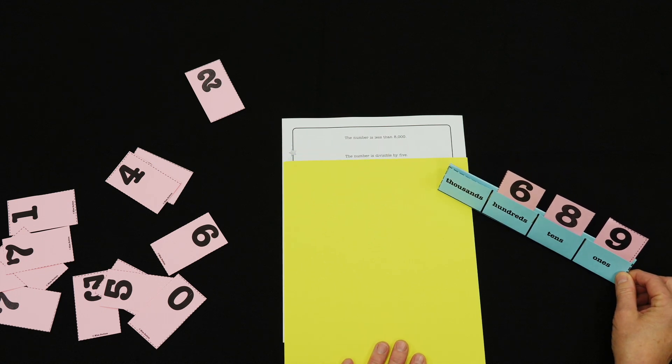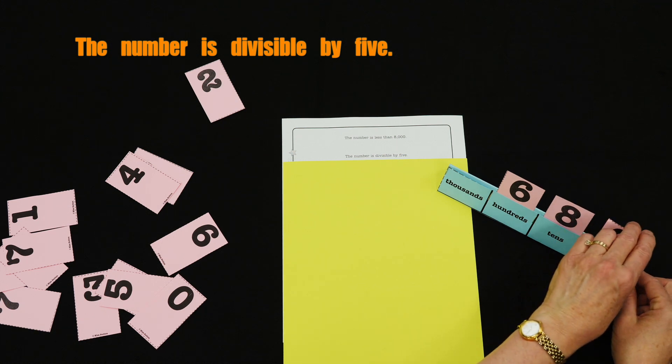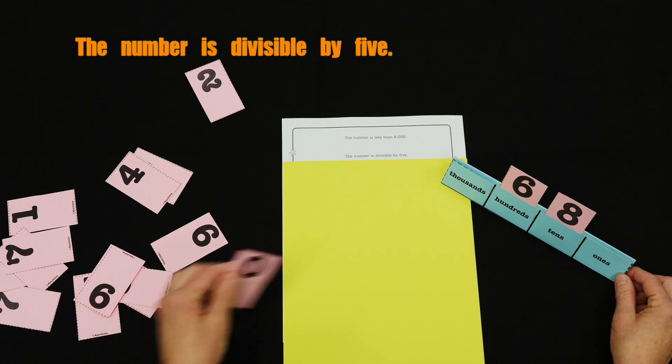Ready for the next clue? Oh, numbers divisible by five. Well, I know a number that is a multiple of five or has five as a factor has a zero or a five in the ones place. So I know I have to make a change.